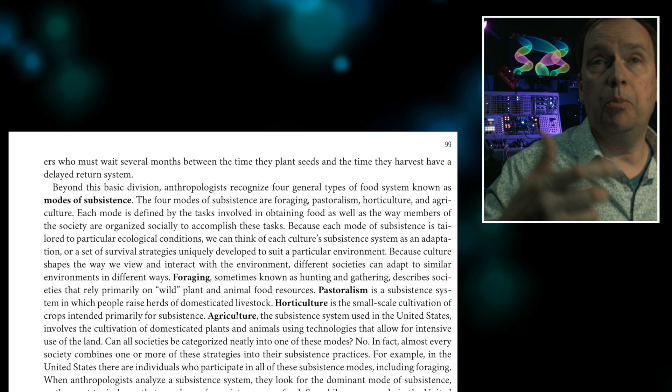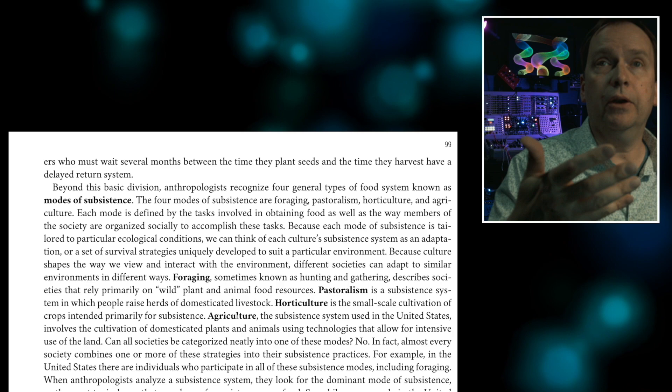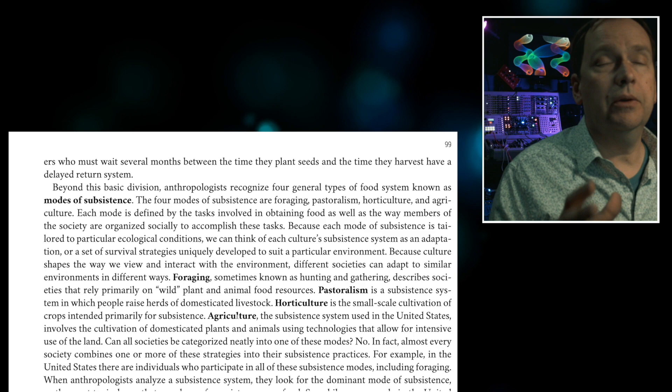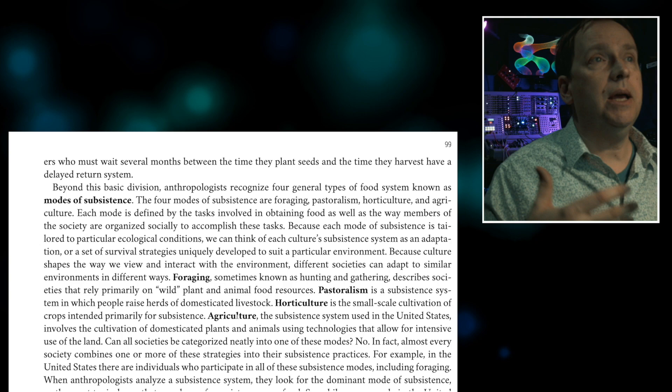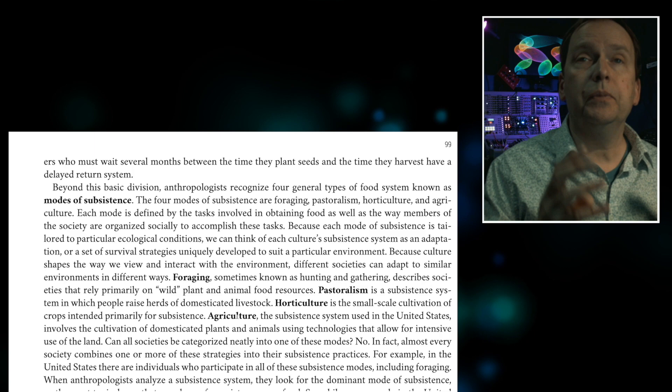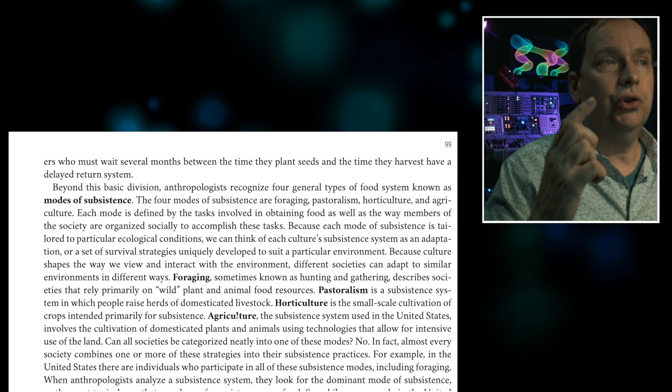The four modes of subsistence Marx addresses are foraging, pastoralism, horticulture, and — in place of agriculture — modern capitalist society. The chapter ends discussing Starbucks, fair trade, and free trade, so it's important to consider these four whether studying sociology or anthropology. The mode of subsistence answers: how do we procure food to provide for our caloric needs? These four basic types are really good to know.